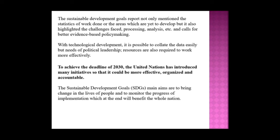To achieve the 2030 deadline, the UN has introduced many initiatives to make progress more effective, organized, and accountable. The main aim of the Sustainable Development Goals is to bring change in the lives of people and to monitor the progress of implementation, which will ultimately benefit the whole nation. This covers SDGs and Millennium Development Goals for development and environmental development.